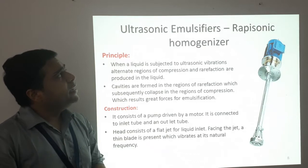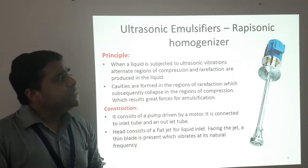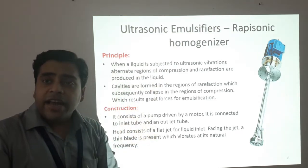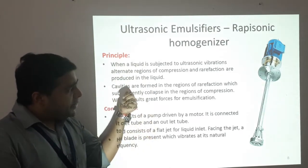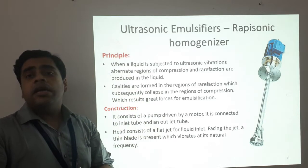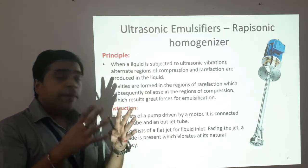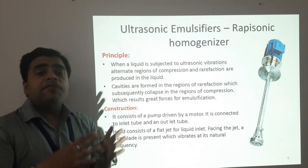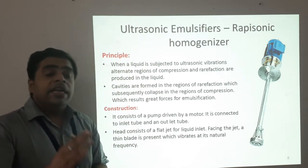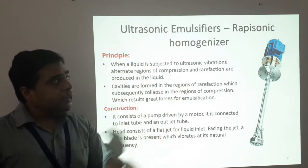This is the classic ultrasonic emulsifier or rapisonic homogenizer. The principle: when a liquid is subjected to ultrasonic vibration, alternate regions of compression and rarefaction are produced in the liquid. Cavities are formed in the regions of rarefaction and subsequently collapse in the regions of compression, resulting in the generation of greater forces required for emulsification. In emulsification, we have to mix two dissimilar phases — like oil and water — which have different specific gravity, polarity, and densities, so we need high force for emulsification, which is generated in a rapisonic homogenizer.